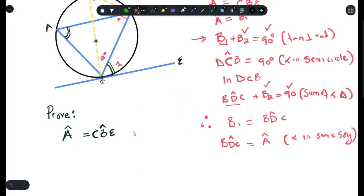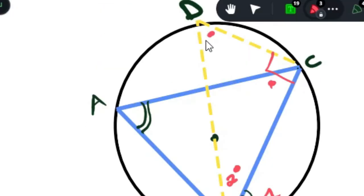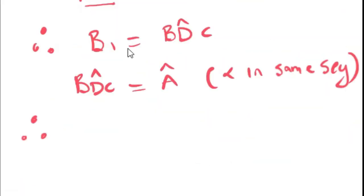Now we also know that BDC is equals to A. The angle BDC here is equals to the angle A here due to angles in the same segment. Angles in the same segment normally forms like a butterfly or some people call it a bowtie. So we understand those two angles would be equal. And again we see that B1 is equals to BDC and BDC is also equals to A.